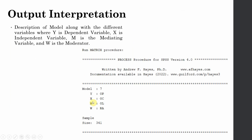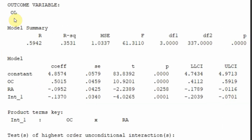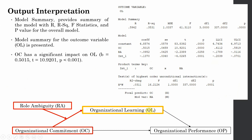The first model summary covers organizational learning as one of the outcome variables. You will have a model summary for each outcome variable. This first outcome, organizational learning, is affected by organizational commitment, role ambiguity, and their interaction term — which shows whether or not role ambiguity moderates this particular relationship.